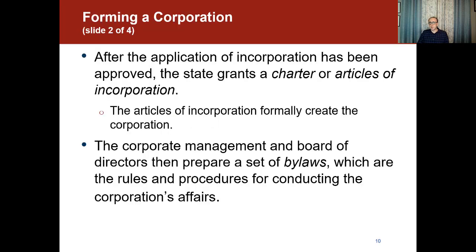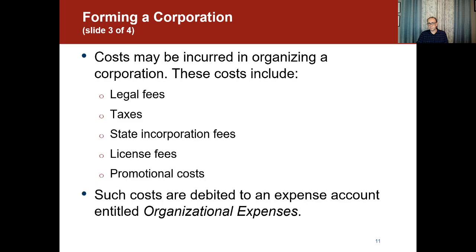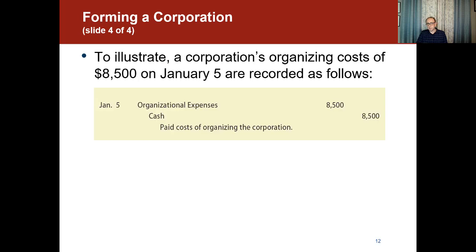After the application of incorporation is approved, the state grants a charter, sometimes called articles of incorporation, which formally creates the corporation. Corporate management and the board of directors then prepare bylaws — the rules and procedures for conducting the corporation's affairs. Costs incurred in organizing a corporation include legal fees, taxes, state and corporation fees, license fees, and promotional costs. These are debited to an expense account called organization expense. For example, corporation organizing costs of $8,500 on January 5th would be recorded as a debit to organization expenses and a credit to cash for $8,500, with the explanation: paid cost of organizing the corporation.